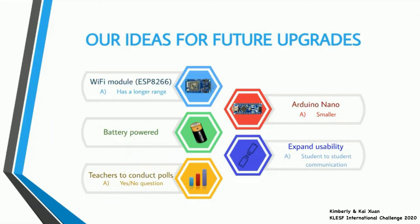We have five ideas for future upgrades. The first will be using a Wi-Fi module, the ESP8266, because it has a longer range communication compared to a Bluetooth module. The downside is that unlike Bluetooth, the teacher will not know if the device is turned off, as with Bluetooth the option to connect greys out when the device is off. With Wi-Fi, the teacher cannot tell if the device is powered on since the connection goes through the router.